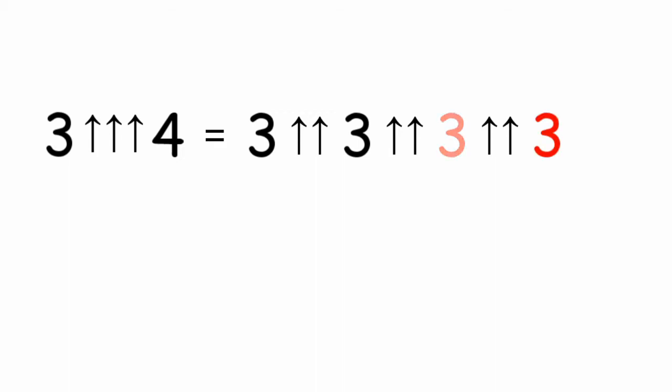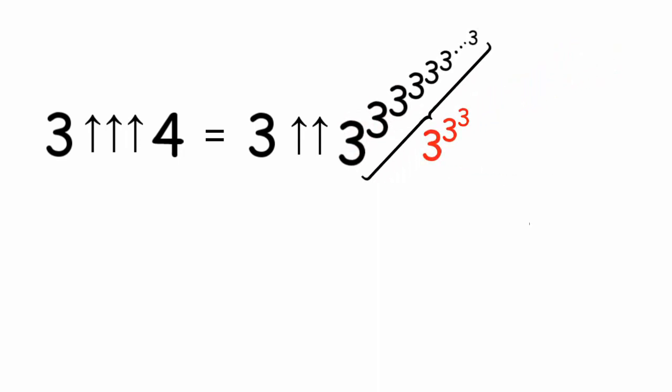3 double arrow 3, as we've known earlier, is 7.6 trillion. Now 3 double up arrow 7.6 trillion. That's 3 to the power of 3, 7.6 trillion times, including the base.